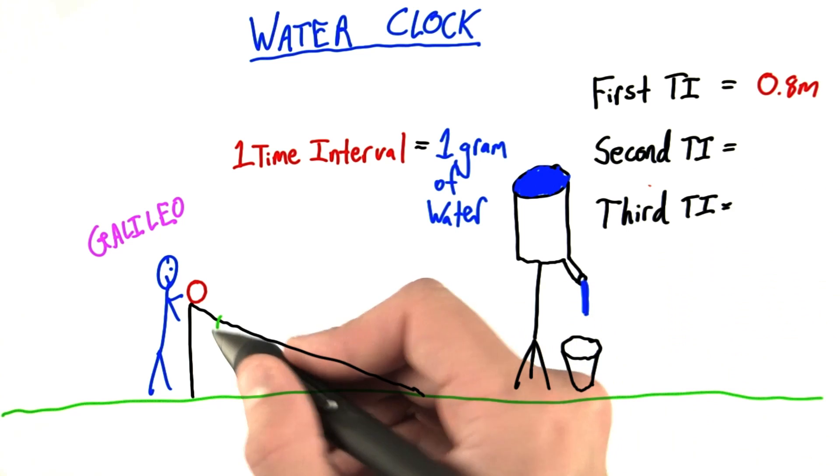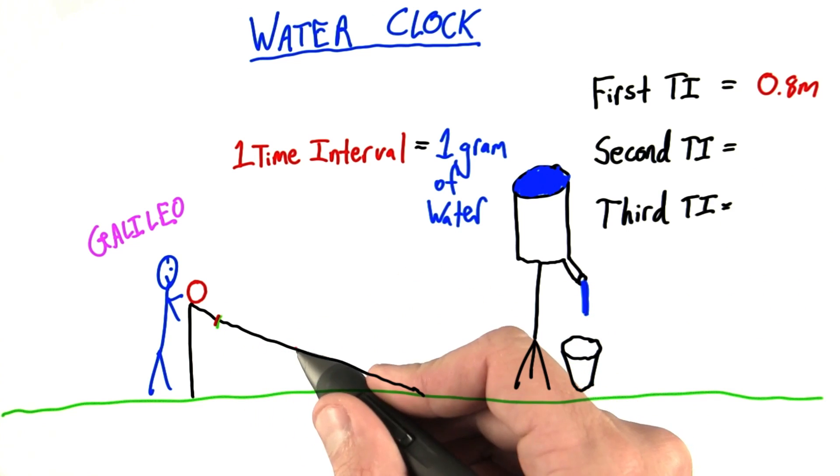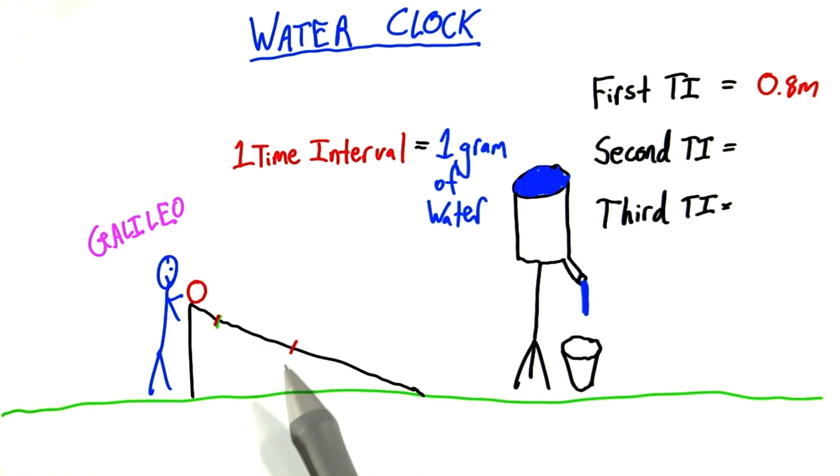I just want to know in the second time interval it rolls from let's say here to some point on this board or on this plane. I want you to tell me how big is this distance in the second time interval and in the third. You can enter your answer here and here in meters.